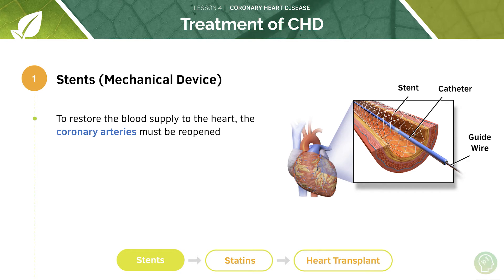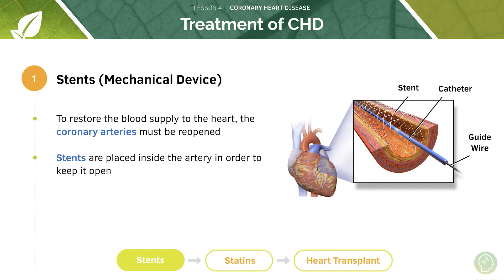Stents are a mechanical device used to restore the blood supply to the heart. In coronary heart disease the arteries are partially blocked by fatty deposits. Stents work by reopening these arteries using a wire that is guided into the blocked artery. This wire may be associated with a balloon which expands to push aside the plaque that has formed on the artery wall, therefore reopening the coronary artery.